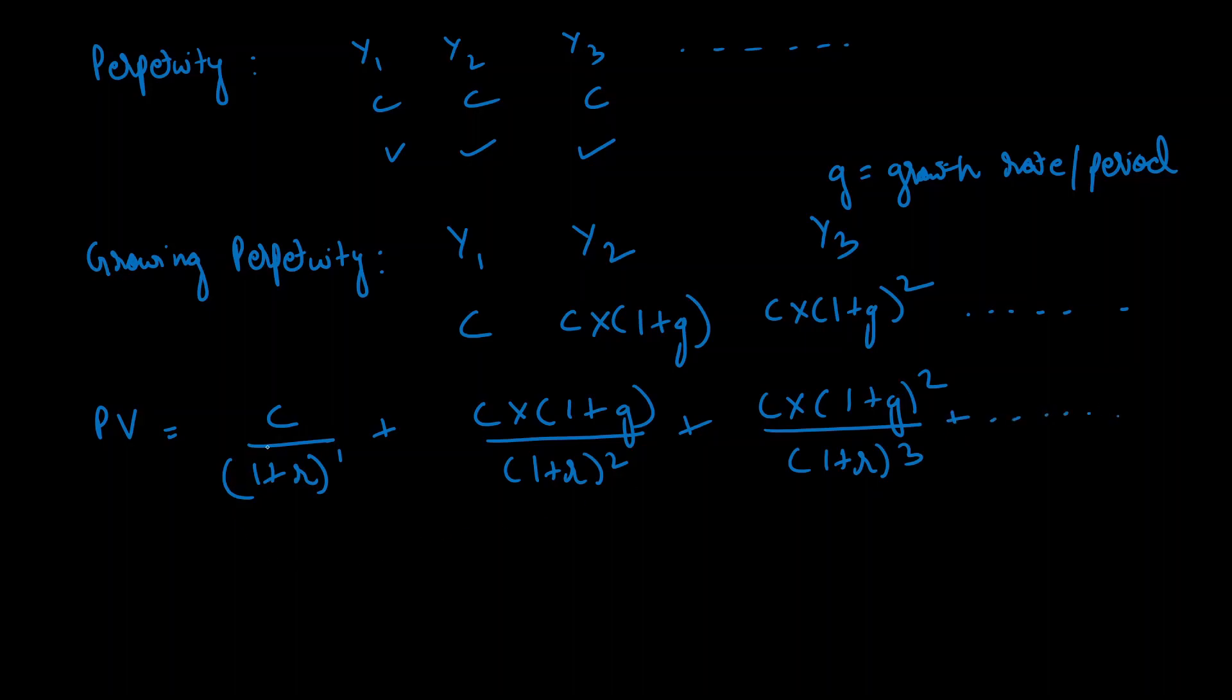Now you can notice that c is common in all of these terms, so we can just take that out. So within brackets we'll have 1/(1 + r) plus (1 + g)/(1 + r) squared plus (1 + g) whole squared divided by (1 + r) to the power three, and this will go on.